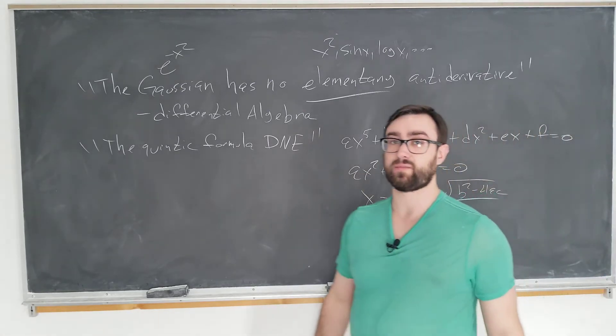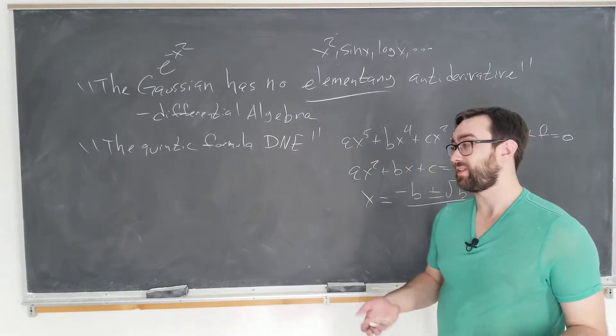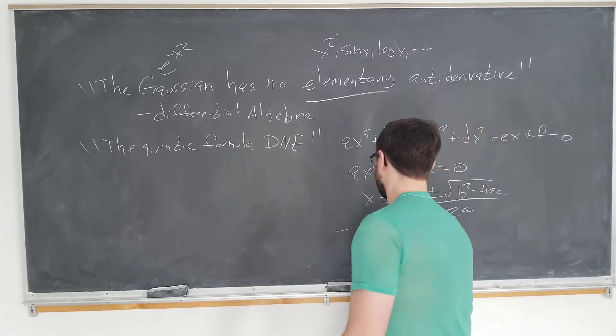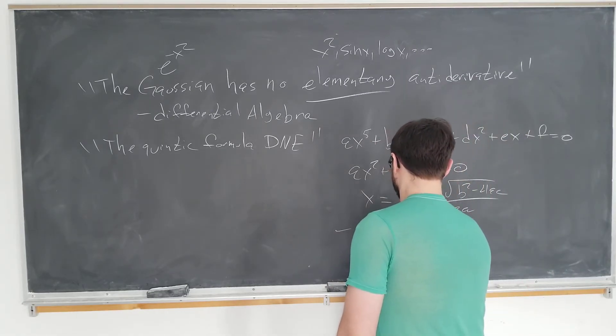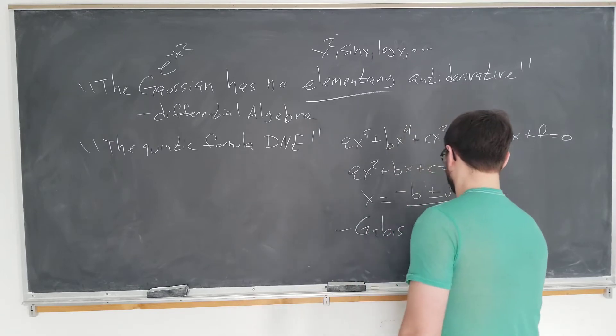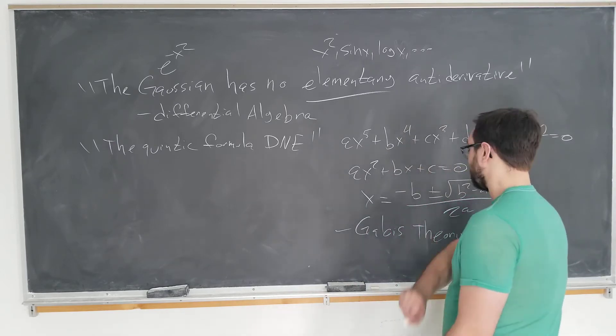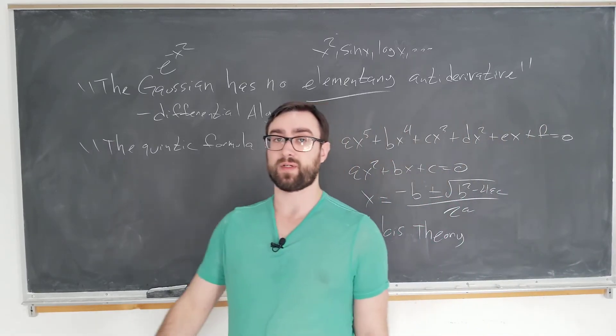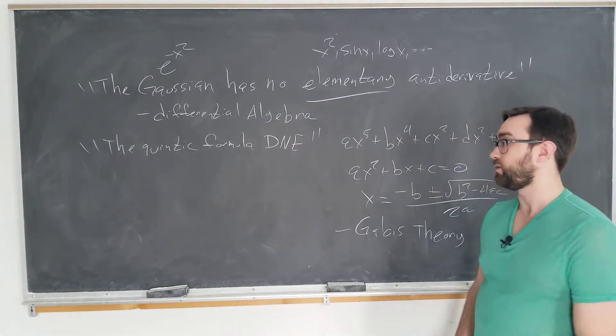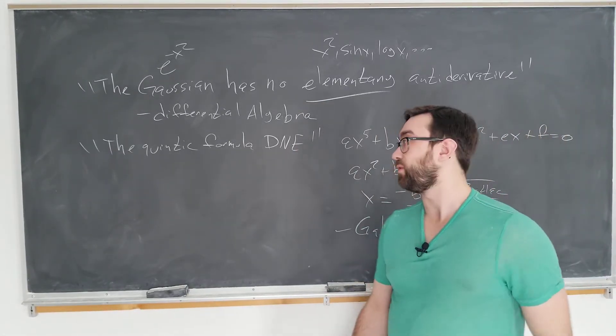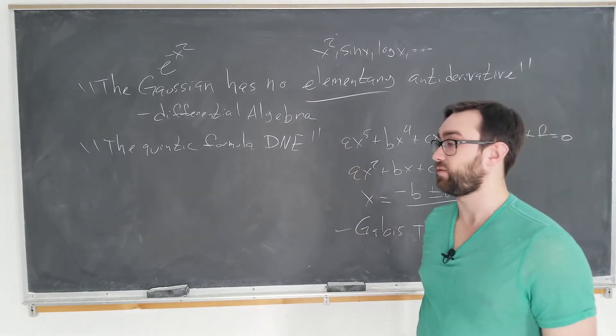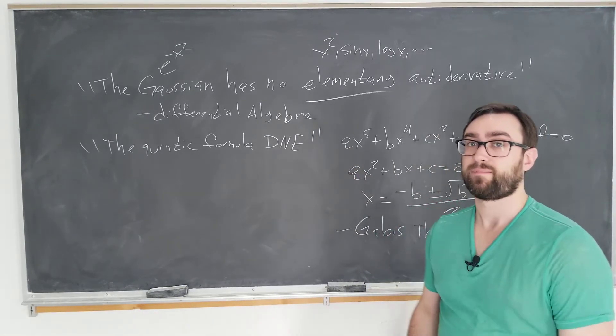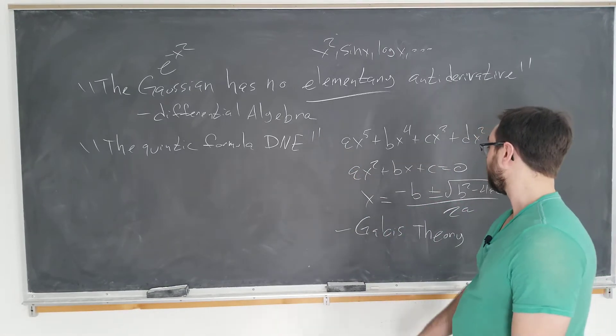You can certainly prove this by considering various subgroups inside of each other when you take Galois theory. This is actually accessible at an undergraduate level. I took it myself in Modern Algebra 2 in college. Do I remember it? No. I could not prove to you that the quintic formula doesn't exist right now. It would require a lot of work. But definitely check out Wikipedia for more information.